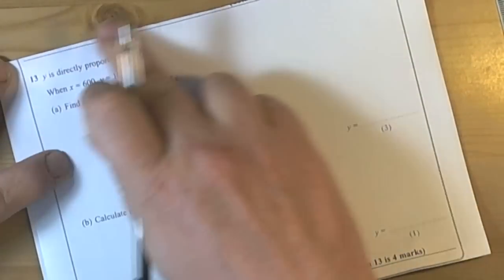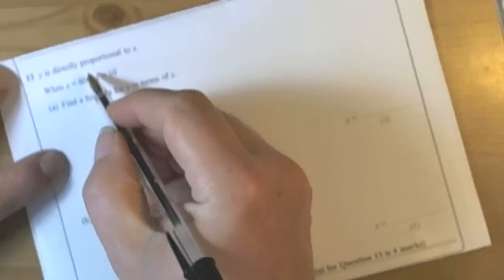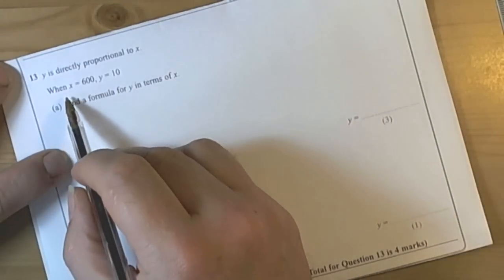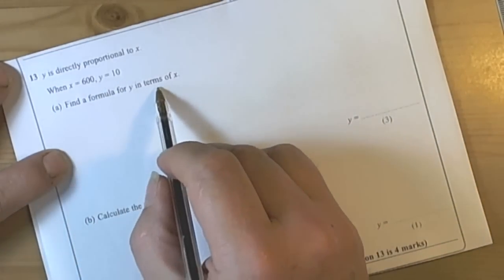This question is asking us to work with proportionality. Let's have a look at what it's saying. It's saying y is directly proportional to x. So when x equals, find a formula for y.